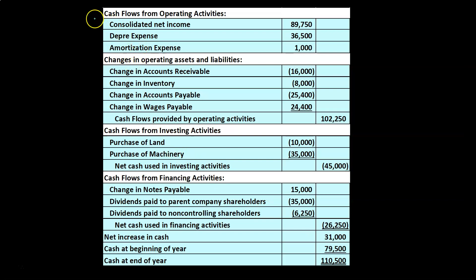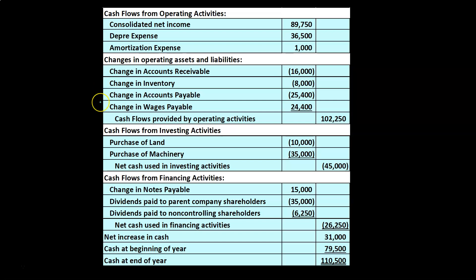So it would look something like this. For the indirect method, cash flows from operating activities, we start with the consolidated net income — and note, we're taking the consolidated net income and then removing non-cash items such as depreciation and amortization, and then the changes in operating assets and liabilities, which includes the change in accounts receivable, accounts payable, wages, and so on. Note this is kind of a worksheet format, so we have 'change' instead of increase or decrease — we could say decrease, decrease, decrease, increase for those items.